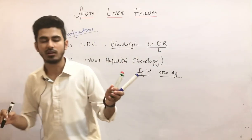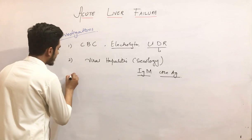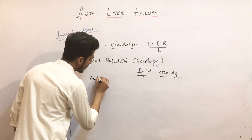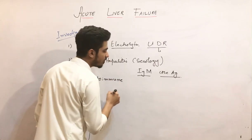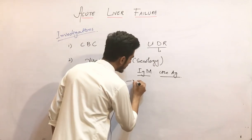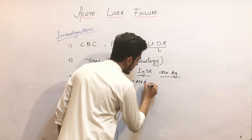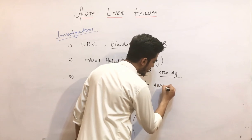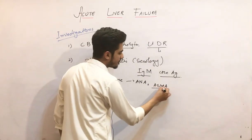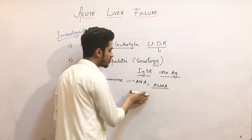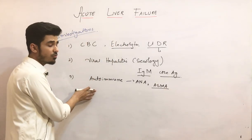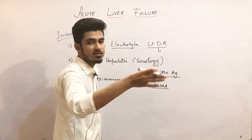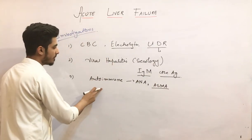Hepatitis A and hepatitis B will be discussed in detail separately in upcoming lectures. We also have to rule out the autoimmune cause, so we will carry out autoimmune antibodies such as anti-neutrophil antibody and anti-smooth muscle antibody. These will be discussed in detail in the autoimmune hepatitis lecture.